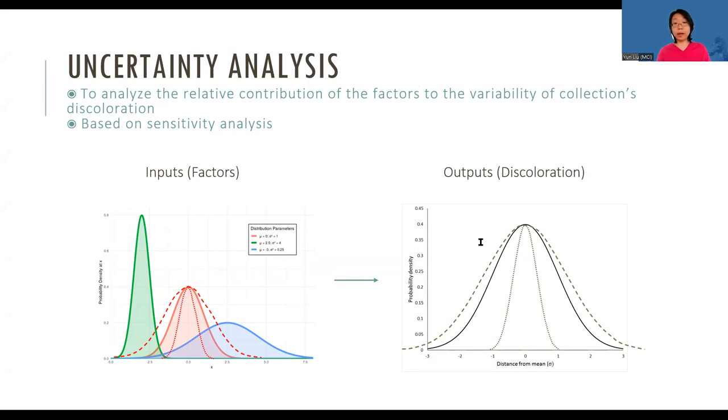This is what the uncertainty analysis does. It analyzes the relative contribution of the factors to the variability of the discoloration of the collections. It defines the factors that have the most significant impact on the variability of discoloration, so that we get an idea of how to change the range of the output if we want.